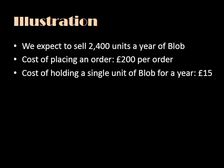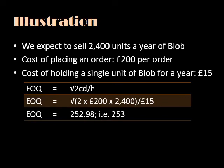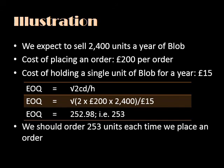We can now put that information into our economic order quantity formula. Our EOQ is going to be the square root of 2 multiplied by the cost of placing an order, £200, multiplied by the annual demand for this product, 2,400 units, divided by the cost of holding a single unit of Blob for a year, £15. That works out at just under 253 units. So every time we place an order with the supplier, we should order 253 units. At that level, we will minimise the overall costs of orders and holding our inventory of stock for this particular product.